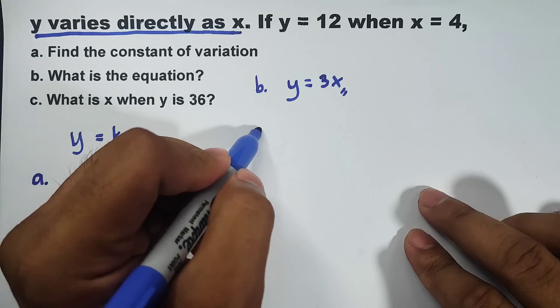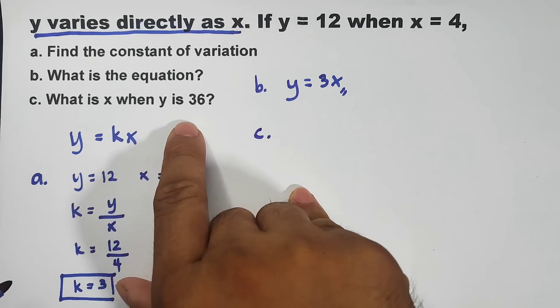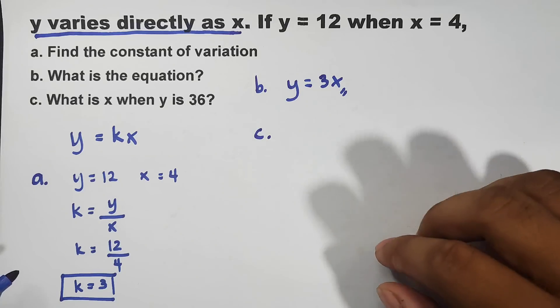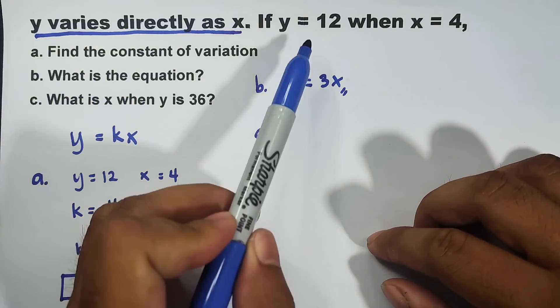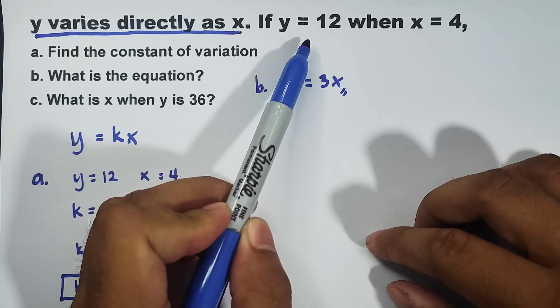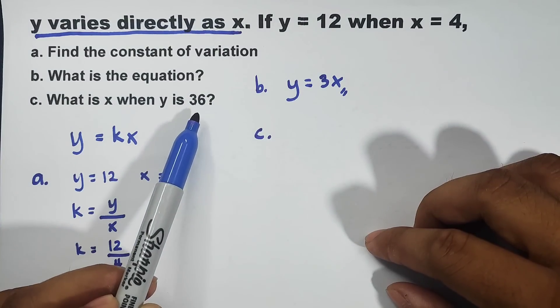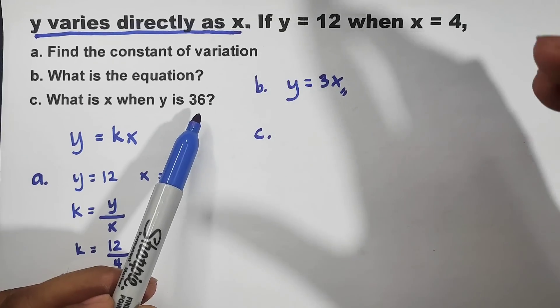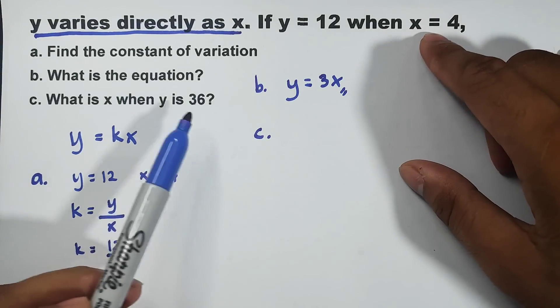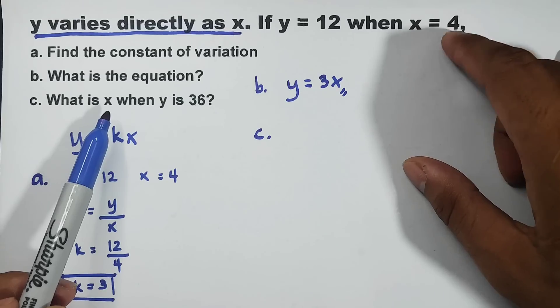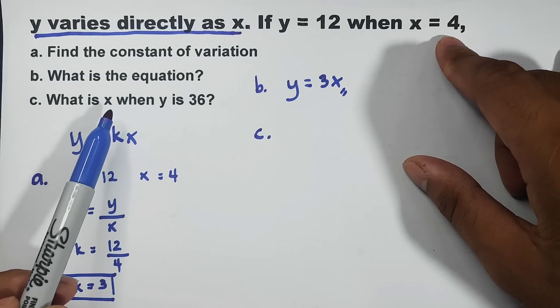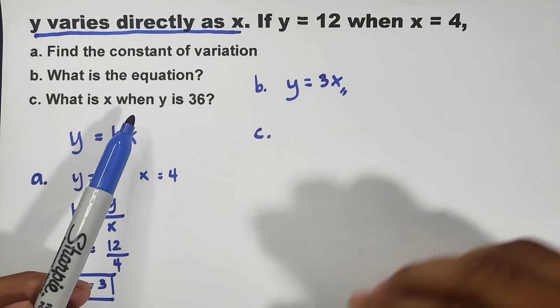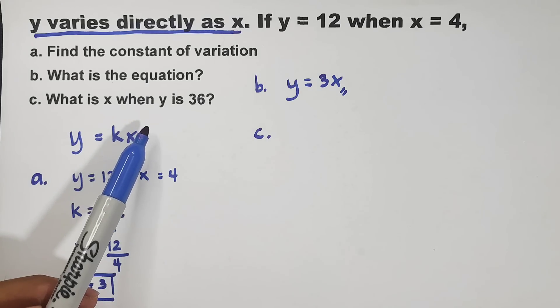So, let's move on with letter C. For letter C, what is x when y equals 36? Ngayon, notice the behavior. Remember, from y equals 12, now y equals 36. Kung mapansin nyo, from 12 to 36, ang movement ng numbers natin is increasing. Meaning, if we are expecting for the value of x, if this is 4, dapat ang maging sagot natin is greater than 4 or higher than 4. Since the variable y is increasing, dapat parehas rin ang behavior ng variable x.